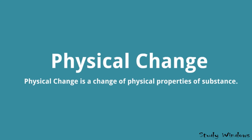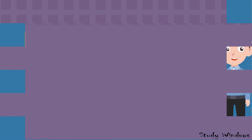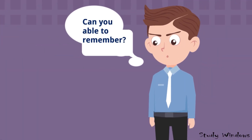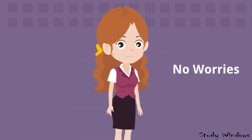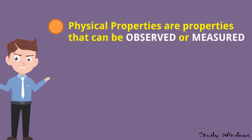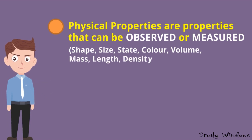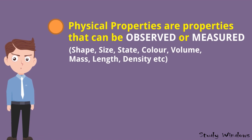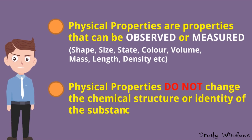Physical change is a change of physical properties of a substance. Physical properties are properties that can be observed or measured, like shape, size, state, color, volume, mass, length, and density. Physical properties do not change the chemical structure or identity of the substance.